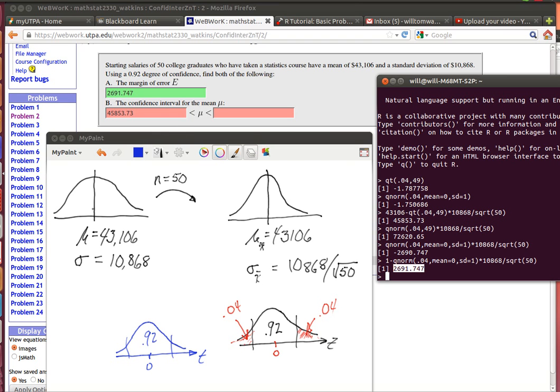So here's the idea. We're thinking that we've got a population whose mean is 43,106 and whose standard deviation is given. We're going to take a sample of size 50.